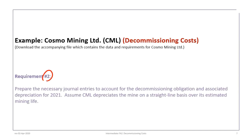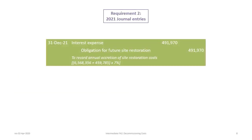Now we'll proceed with requirement 2: to prepare journal entries for the decommissioning obligation and associated depreciation for 2021. At December 31st, 2021, we continue to calculate accretion of the site restoration costs by debiting interest expense and crediting the obligation for future restoration. The calculation is the original balance of $6,568,356 plus the 2020 interest, giving us $491,970 as the associated debit and credit.